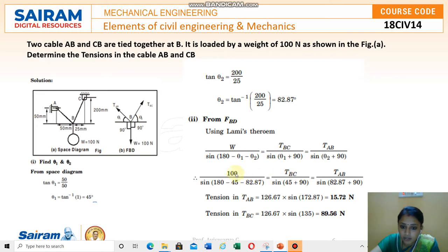Just compare the known value with the unknown. First compare TBC with this 100 and again TAB with this 100 N force. Finally you will get the tension at TAB is 15.72 N and TBC is 89.59 N. This is how we need to find the value of tensile forces.